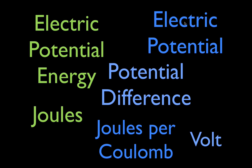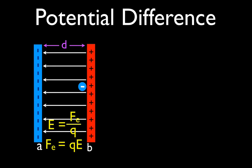Electric potential, usually referred to as just potential, and potential difference, sometimes referred to as electric potential difference, are measured in joules per coulomb, which we call the volt. These are often just referred to as potential and potential difference.